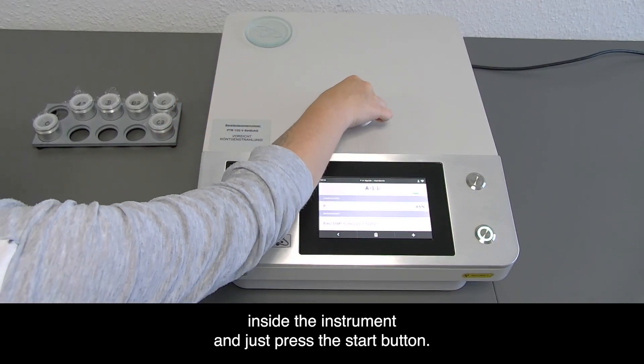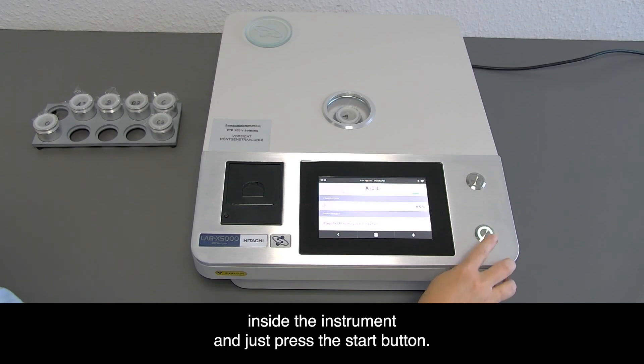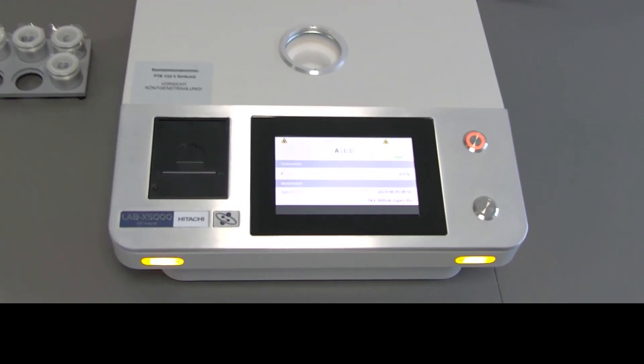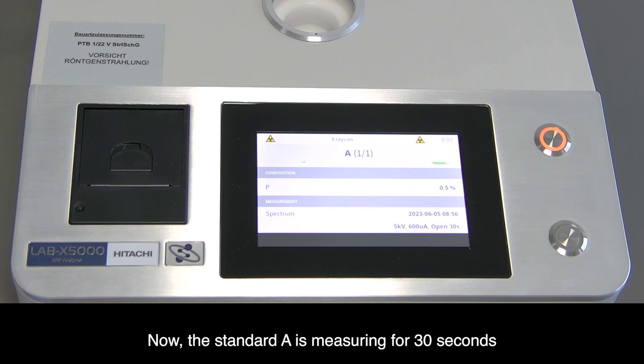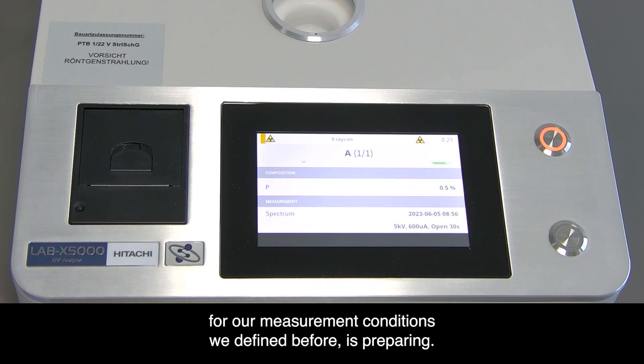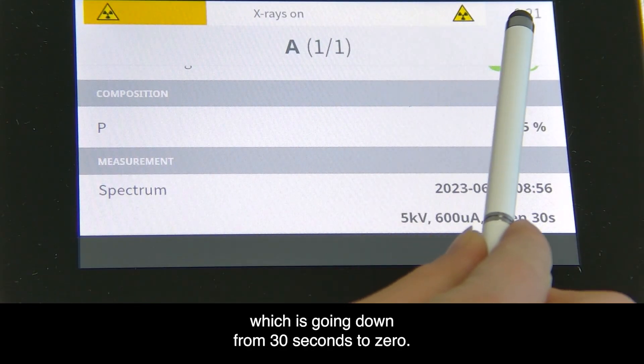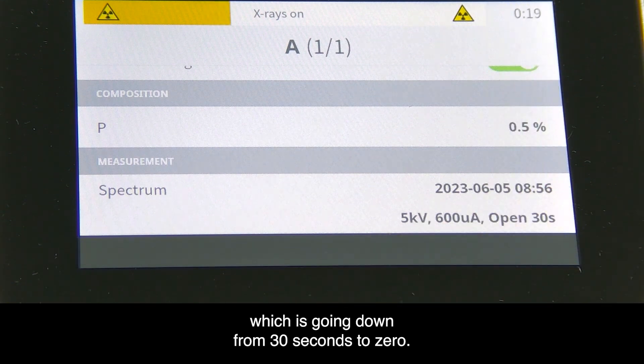Place it inside the instrument and press the start button. Standard A is now measuring for 30 seconds. We see the spectrum for our measurement conditions preparing. The time bar is going down from 30 seconds to zero.